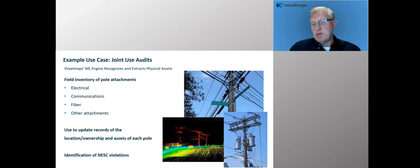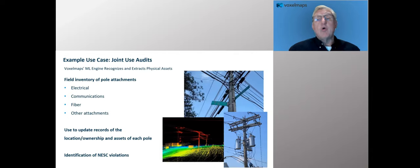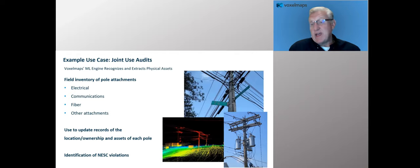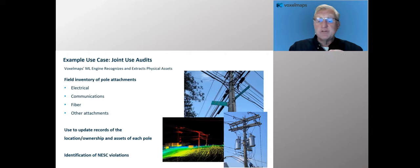There's also lots of interest in performing joint use audits. In the utility industry, you have a pole owner — many times a utility, many times local governments — and people can attach to that pole. They want to know who's attached and where the attachments take place. This is really support for the field inventory of pole attachments, whether electrical, comms, fiber, or light attachments. They use this to update records for location, ownership, and the assets on each pole, including identification of NESC violations.